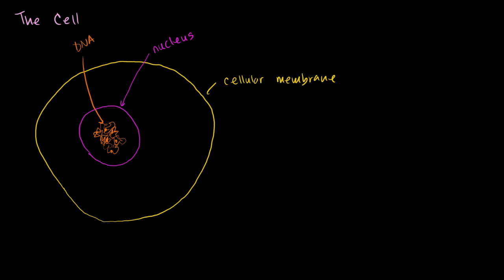When some people looked at cells and saw a nucleus in some but not others, they said this is a good way to classify organisms. So they called things that had nuclei eukaryotes.